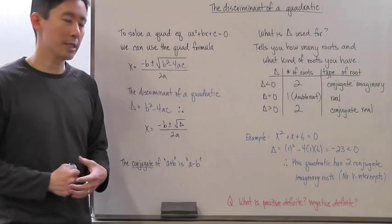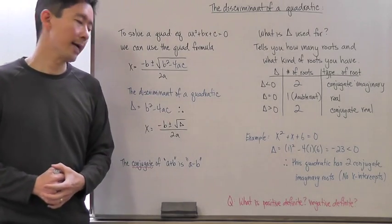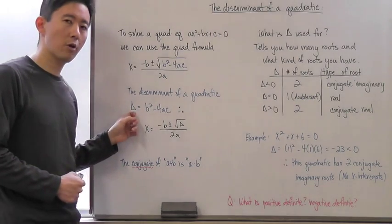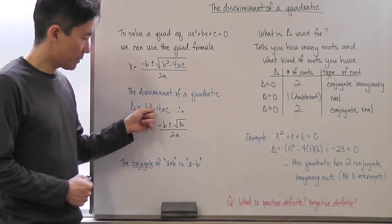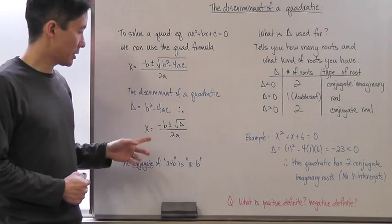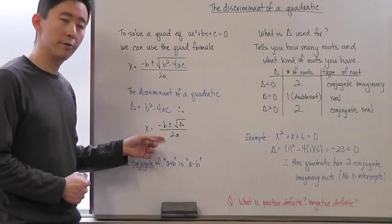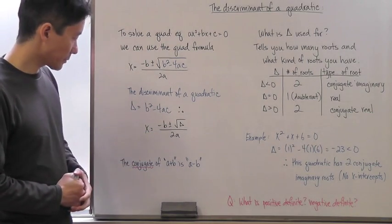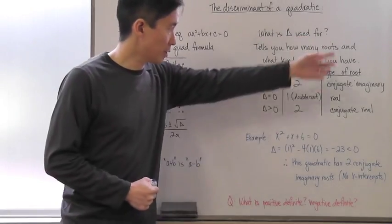That particular part — b² minus 4ac — is called the discriminant of a quadratic. We symbolize it with Delta, so the discriminant is just b² - 4ac. You'll often see the quadratic formula written in this abbreviated form using Delta.